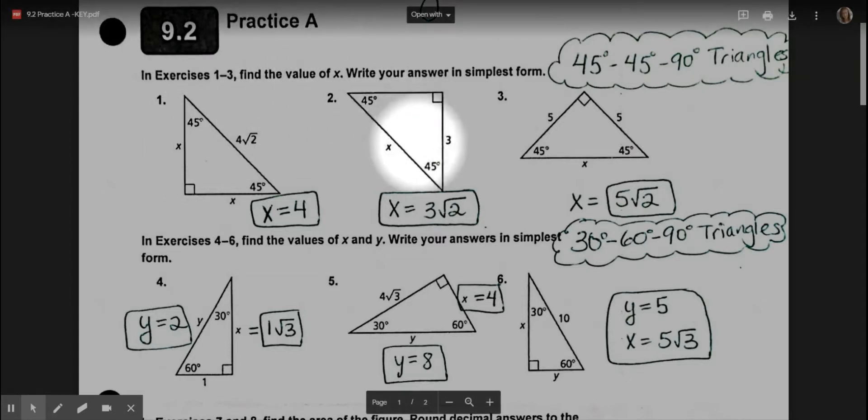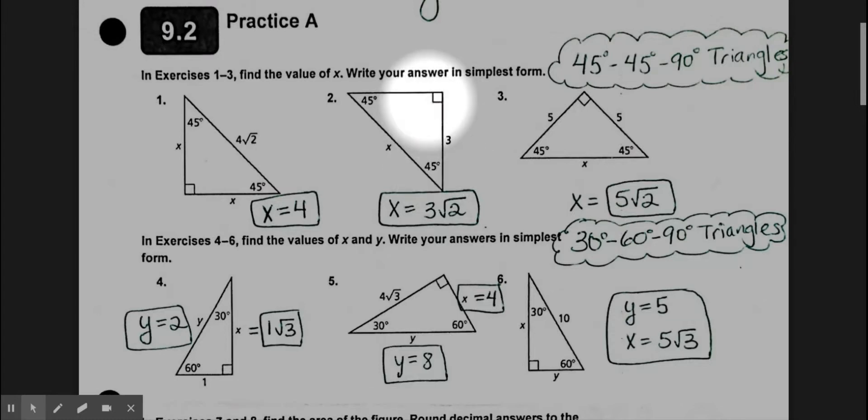For problem two, we have a 45-45-90 triangle again, and the unknown part is the hypotenuse. We know the leg is 3, or the side of the square, the half-square that we were talking about last time. But anyway, we know one of the legs is 3, so the hypotenuse is very simply 3 times radical 2, because that's the relationship—the hypotenuse is always the leg times radical 2. So here's the answer: 3 radical 2. This is the most exact answer.